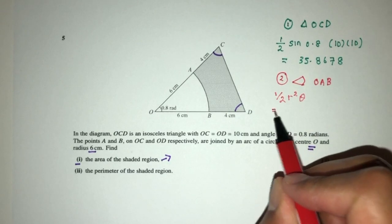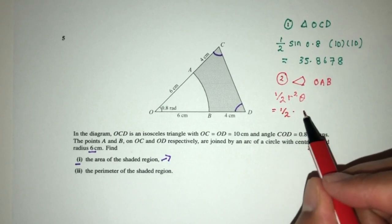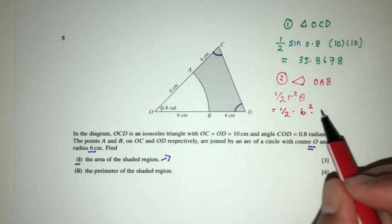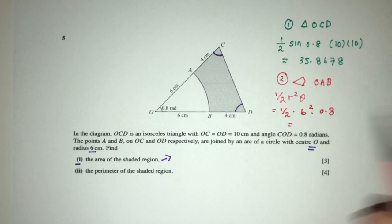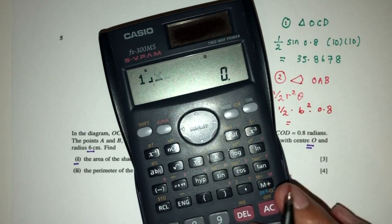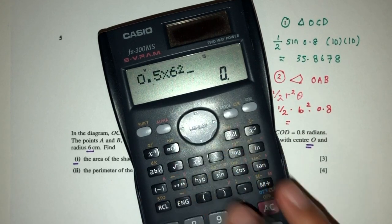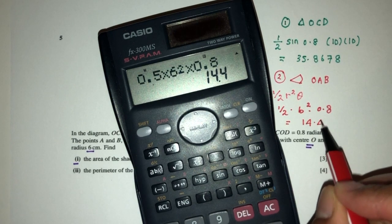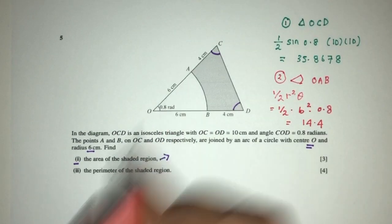Half is half, obviously. R squared is 6 squared now, and times theta, which is 0.8. Half times six squared times 0.8, that will be 14.4 as your value for this area.